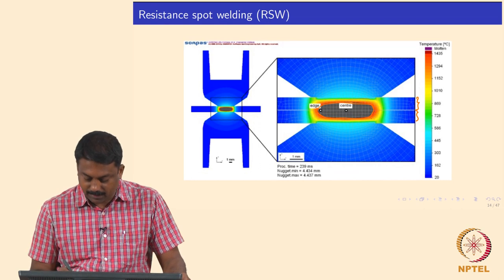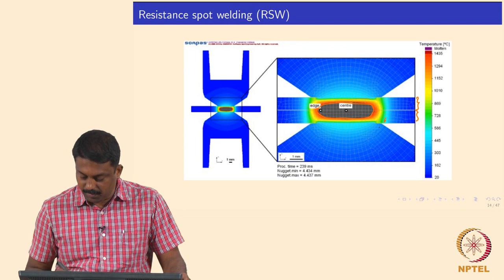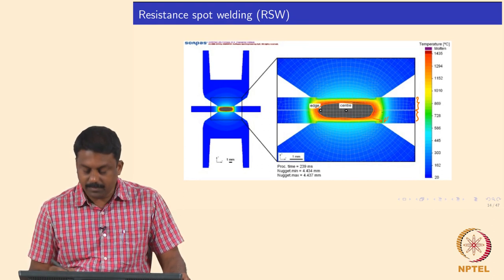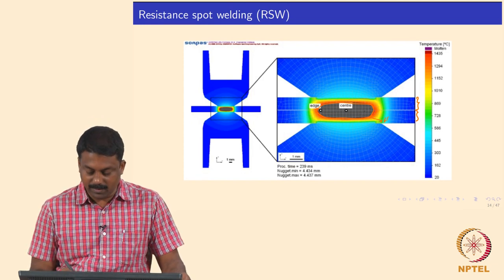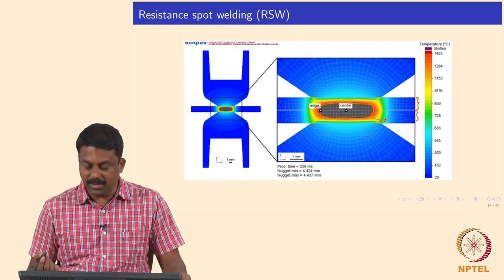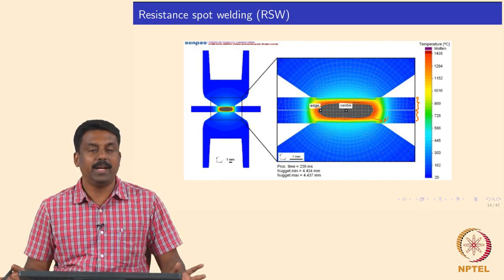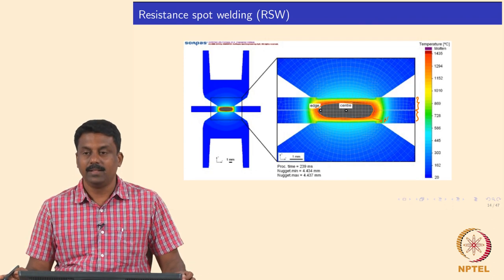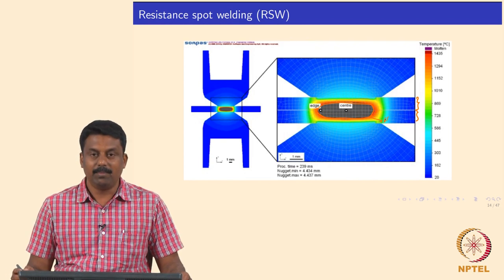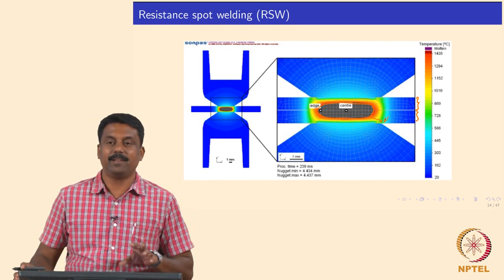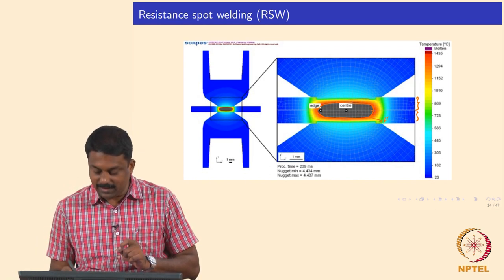Looking at the temperature distribution, you already reach close to room temperature somewhere about 1 mm from the fusion boundary. From about 1400°C you reach room temperature within 1 mm distance. The temperature gradient is extremely high, and due to that you minimize the heat affected zone significantly. But the problem in resistance spot welding is not the heat affected zone — it is the weld centerline segregation.